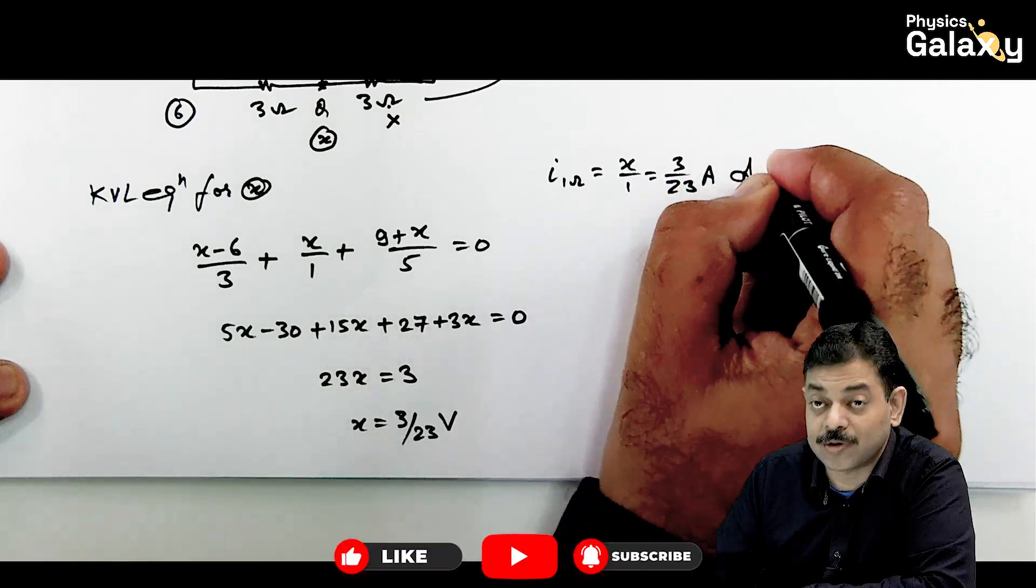Applying KVL equation at x: current through 3 ohm is x minus 6 by 3, plus x minus 0 by 1, plus 9 plus x divided by 5 equals 0. Taking 15 as LCM, this is 5x minus 30 plus 15x plus 27 plus 3x equals 0. So 23x equals 3, giving x equals 3 by 23 volts. Current through 1 ohm is x by 1, which is 3 by 23 ampere. That is the answer.